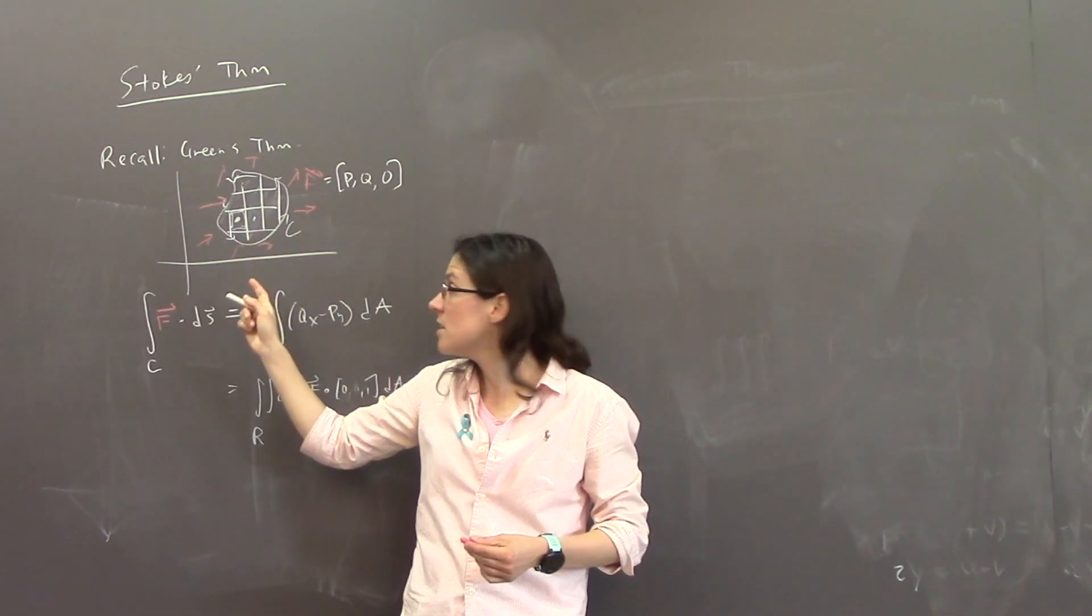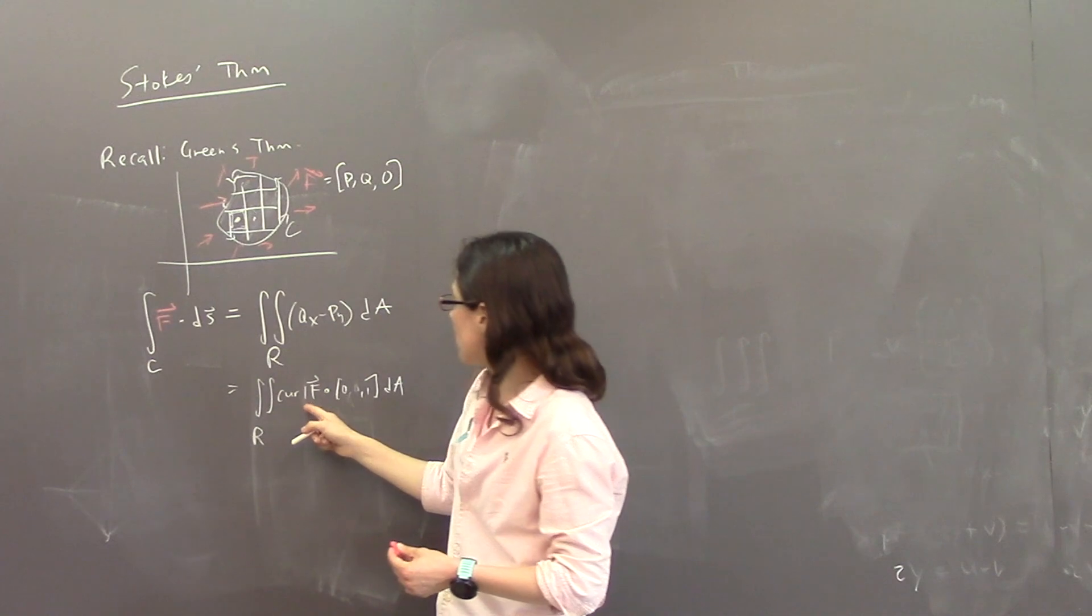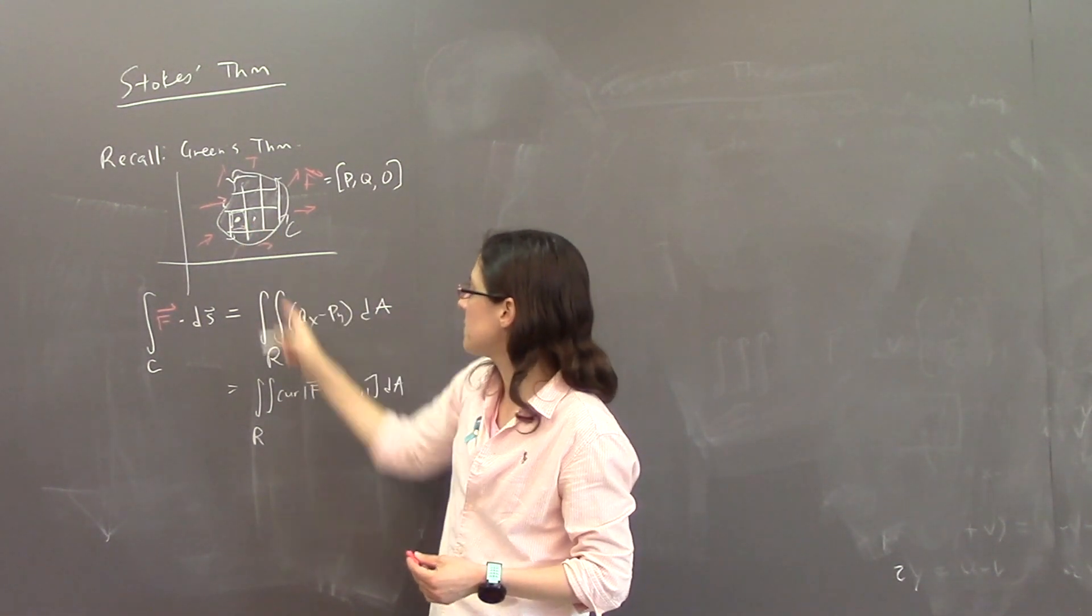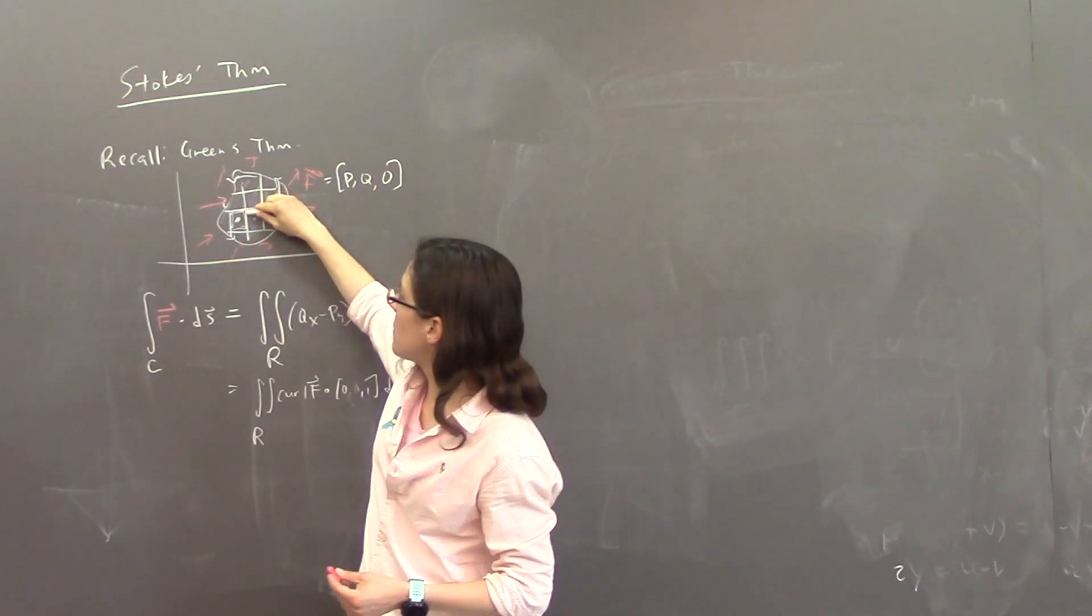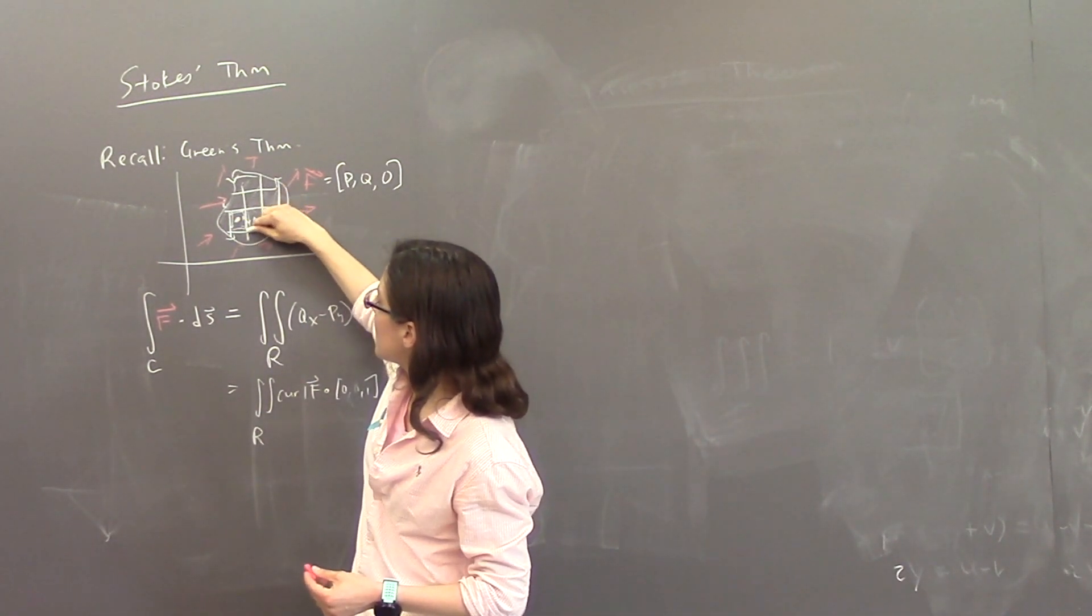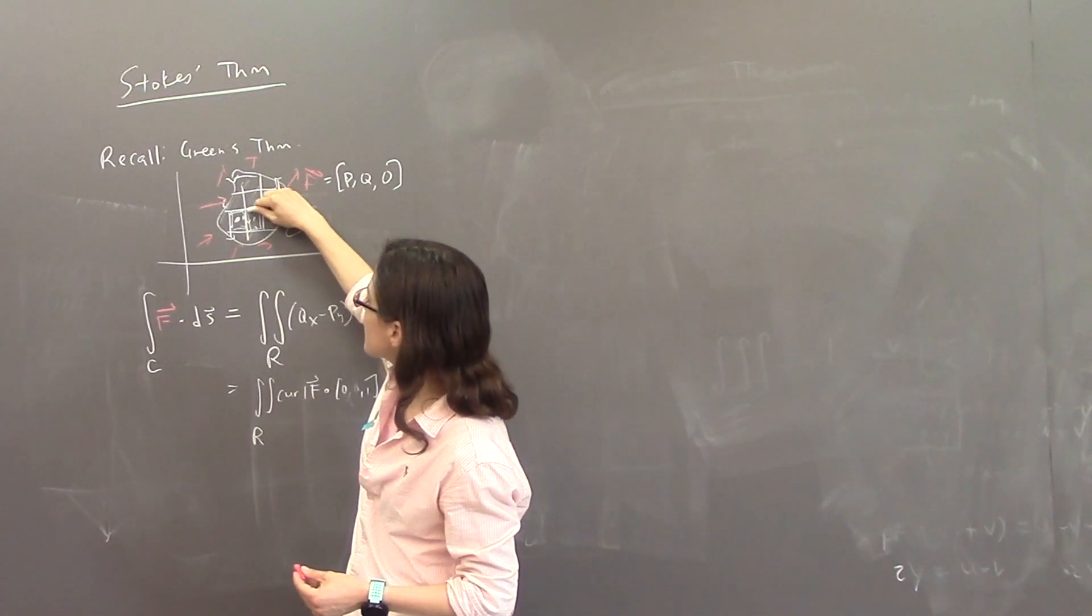And vice versa. So the idea is you could compute the curl at each point inside, or you could compute the vector line integral around each box.